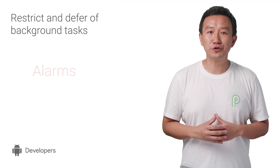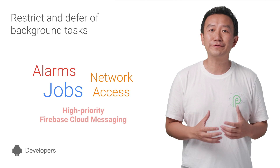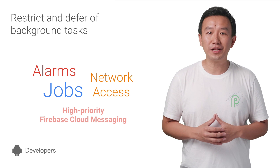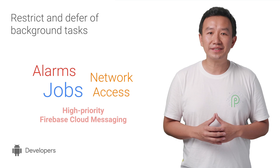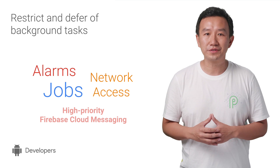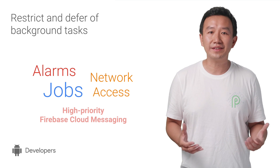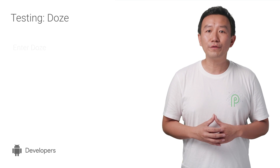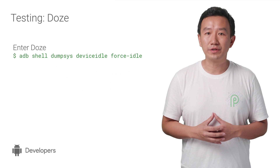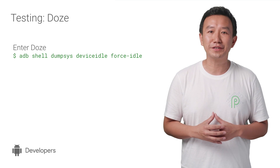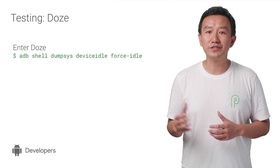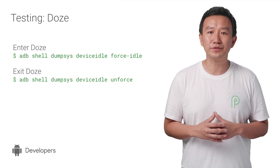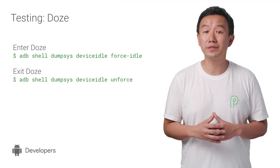Various battery management features boil down to restrictions and deferred access to some combination of background tasks. For developers, therefore, it's important to test against these restricted scenarios. Let's go over some design and testing best practices. Ensure proper testing over a range of increasing restrictions. ADB commands are available to simulate the conditions, and you can also exit these states through similar commands available in the developer docs.